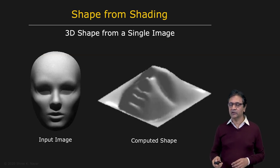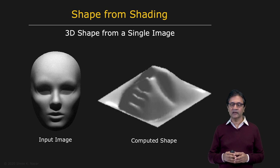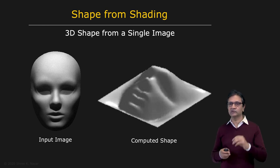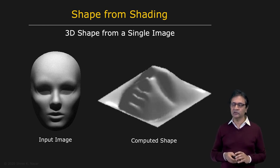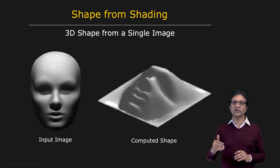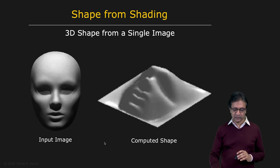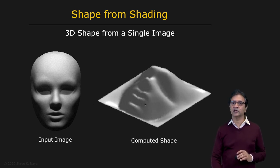After that, we're going to look at the more challenging problem of shape from shading. In shape from shading, you're trying to recover three-dimensional shape information from a single shaded image of the object. It's a very challenging problem — it doesn't have a solution without throwing in additional constraints or assumptions. We look at what assumptions are reasonable to make, then develop an algorithm that takes you from the image on the left to the three-dimensional shape on the right.